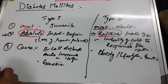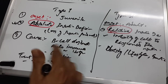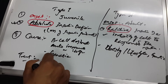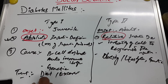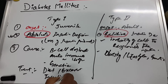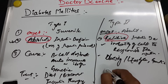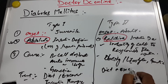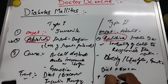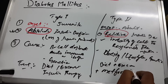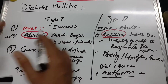Regarding treatment: Type 1 requires insulin therapy along with diet control and exercise, because insulin must be supplied externally. Type 2 is managed with diet plus exercise, and oral antidiabetic drugs such as metformin rather than insulin therapy. Other drugs for Type 2 will be described in future videos.